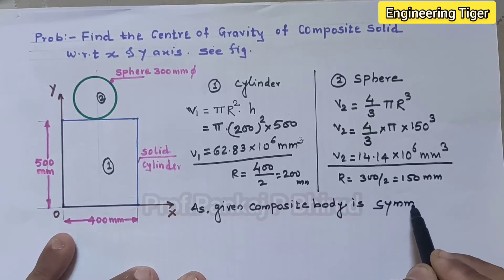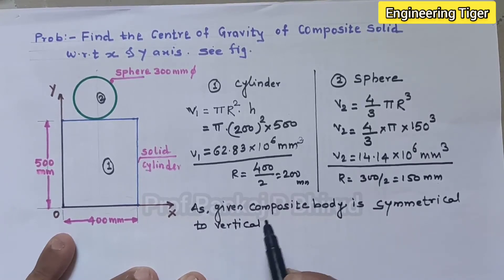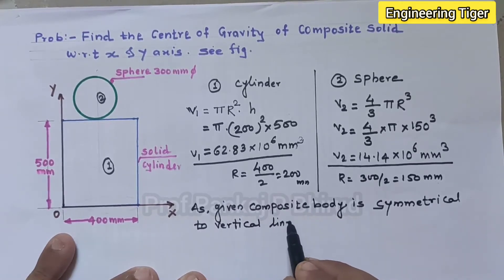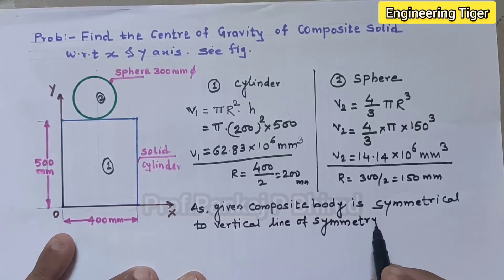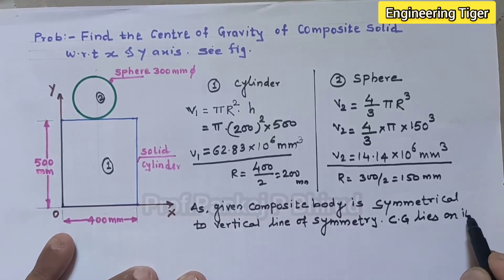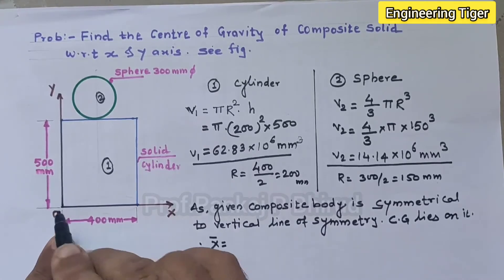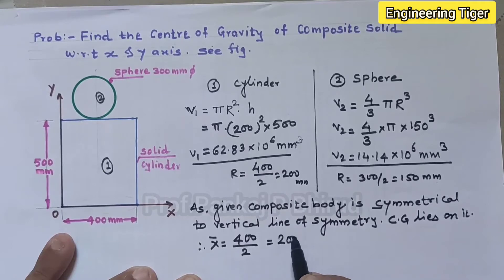As the given composite body is symmetrical to vertical line of symmetry, the CG lies on it. Therefore x bar is 400 by 2 that is 200 mm.